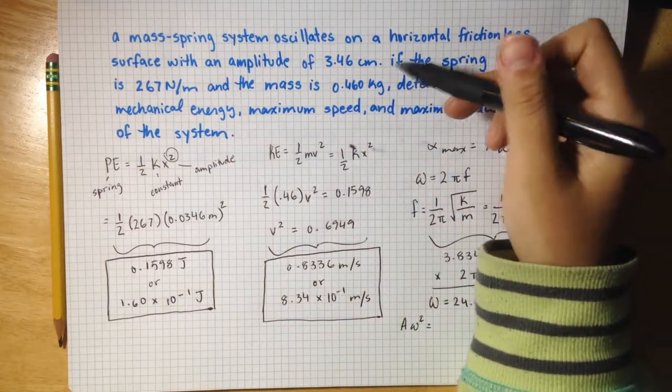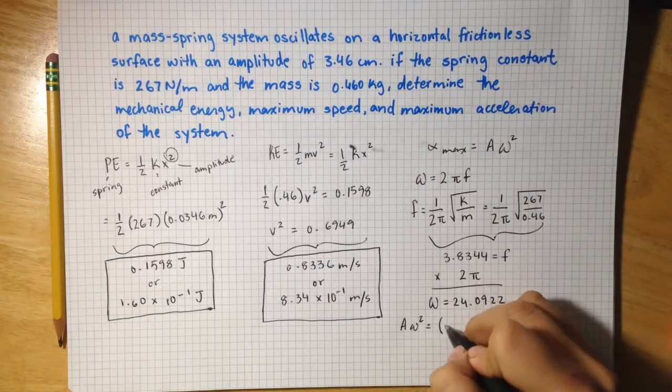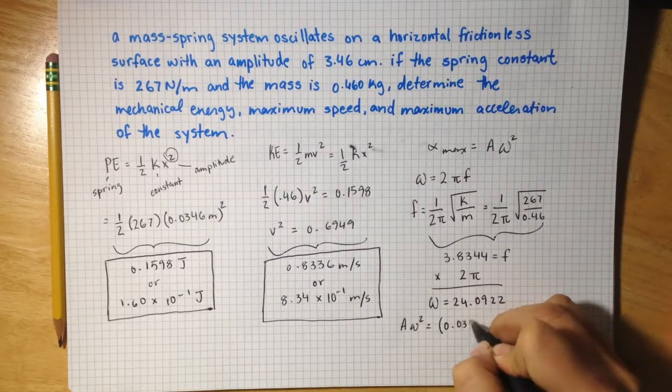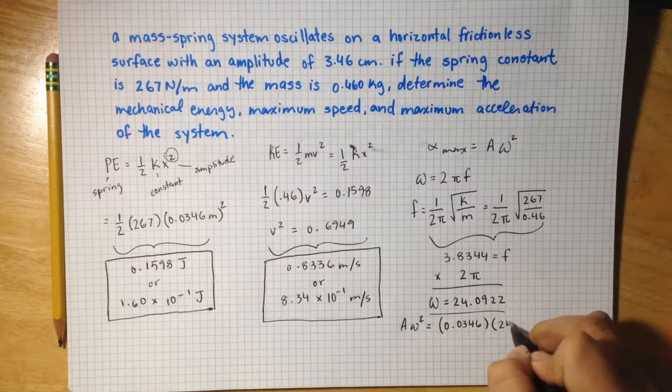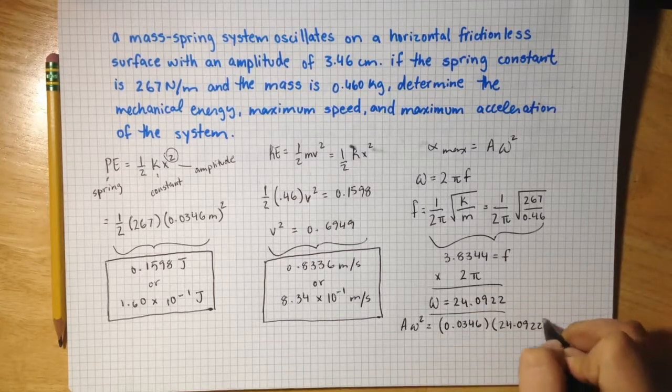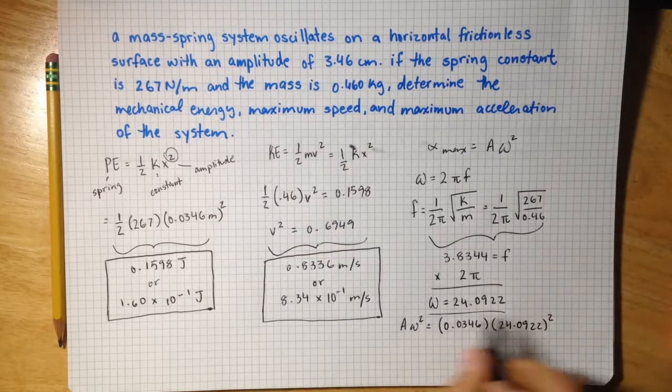Amplitude, they give us in centimeters, we have to convert it to meters and write it as 0.0346 times the angular frequency, which is 24.0922 squared. Don't forget the squared sign.